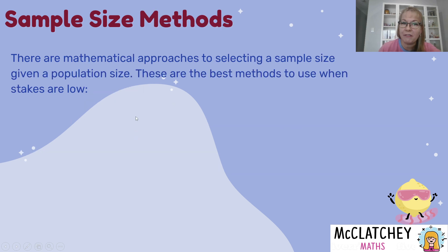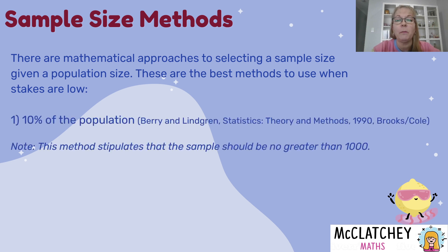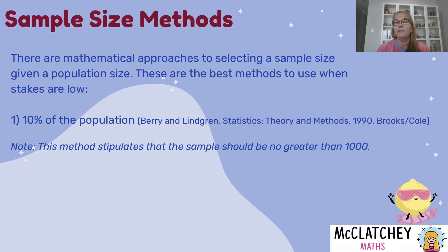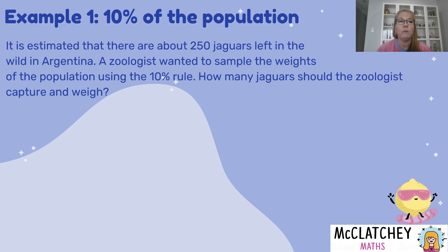Now I'm going to take you through some mathematical methods to work out your sample size. These methods are best used when you have low risks and low stakes — typically high school and university assignments. The first is called the 10% of the population rule. I've given a source from a valid website. One limitation: the sample size should not be greater than 1,000, so this method is not suitable if your population is more than 10,000.